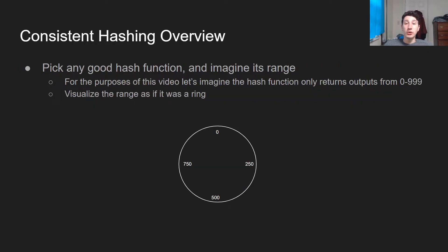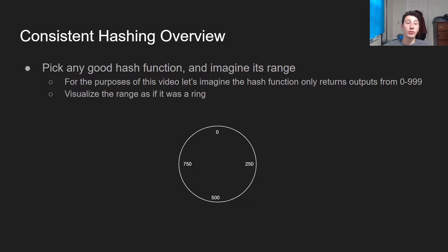Let's do an overview of consistent hashing. First, we're going to choose ourselves a hash function. A hash function basically takes any input and gives us an output for some given range. A hash function is basically a one-way function — from the output you can't really get back the input, but that's kind of irrelevant here. For the purposes of this video, let's imagine the hash function is only going to return the range 0 to 999, and then I'm going to put all those outputs on a ring. So after 999, you go right back to 0.